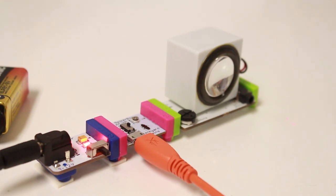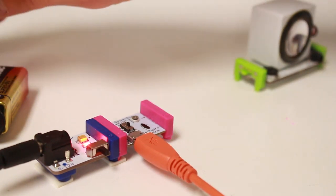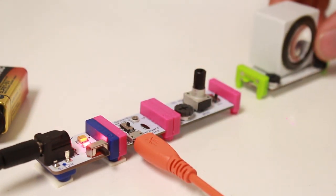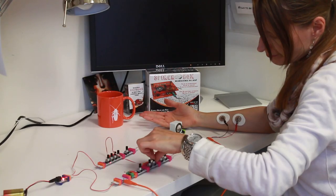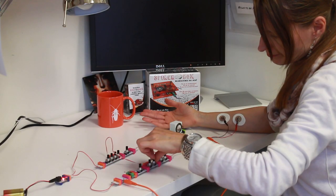You can also use the EMG spiker bit to make music. Simply add in your synth bits before the speaker. Then enjoy as your body's electrical activity produces sounds.